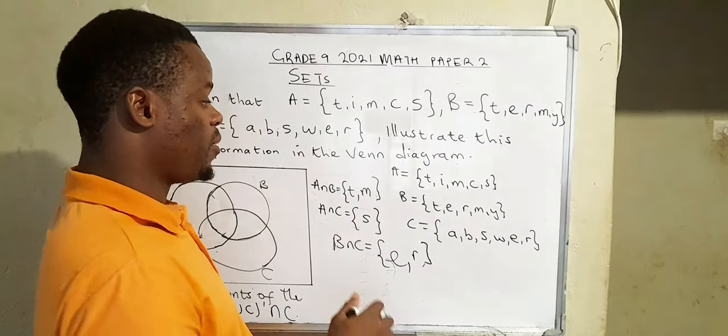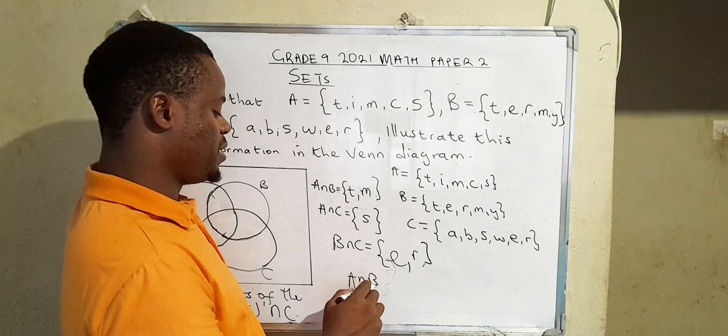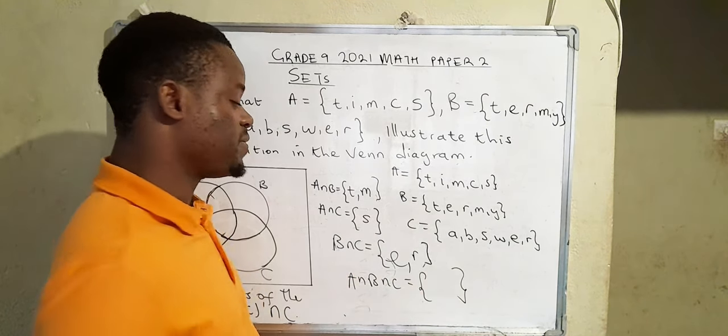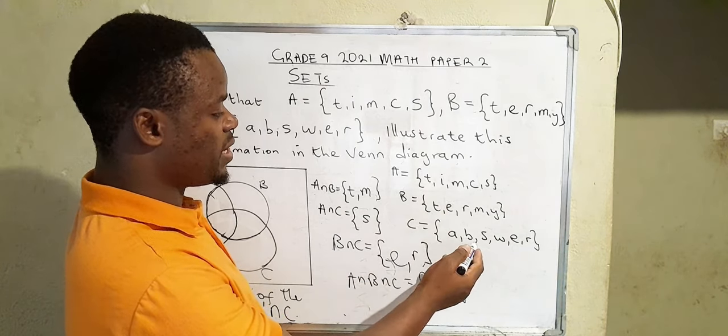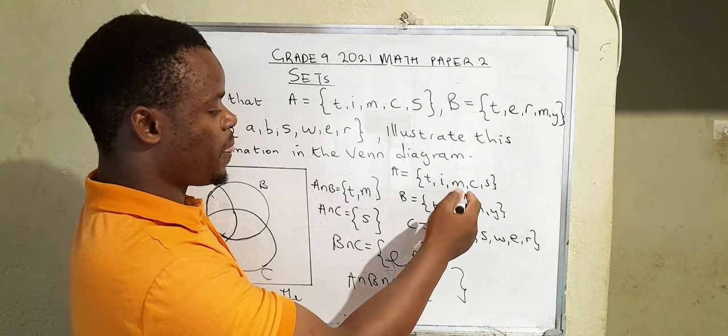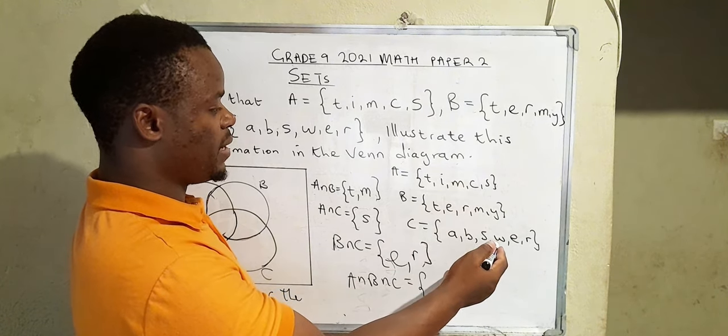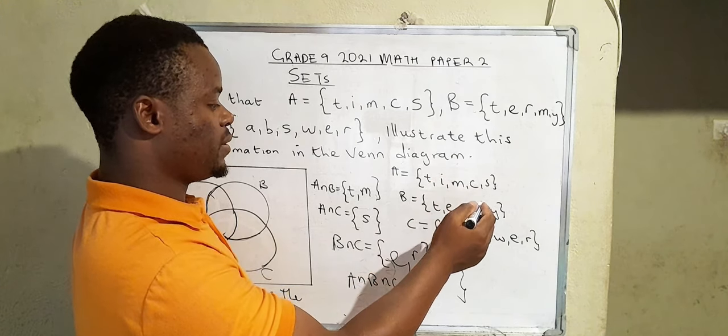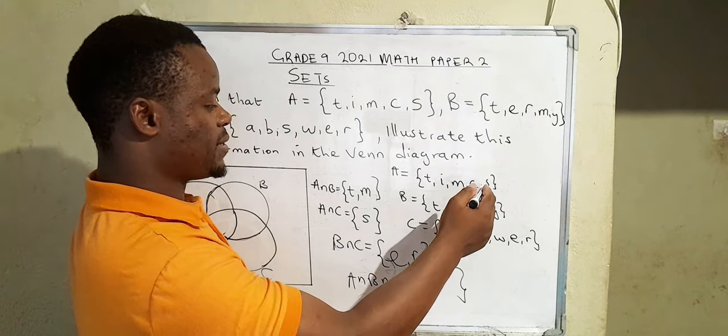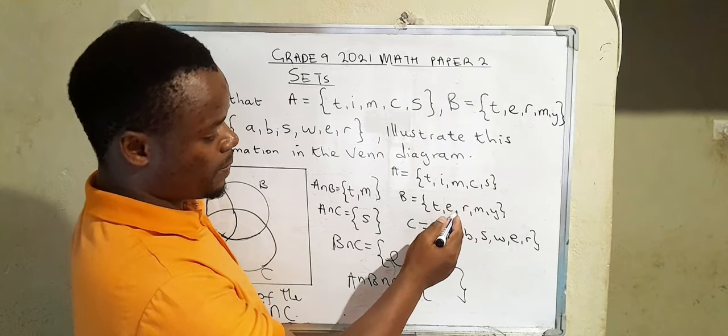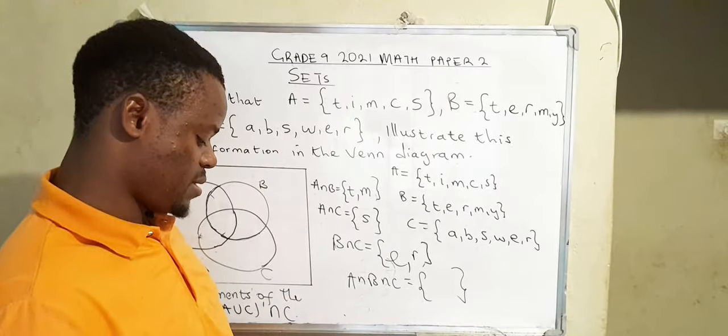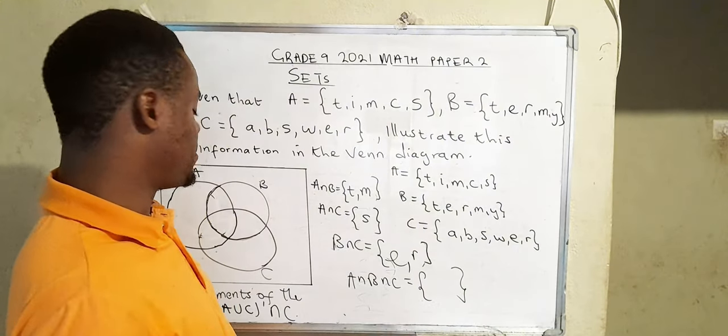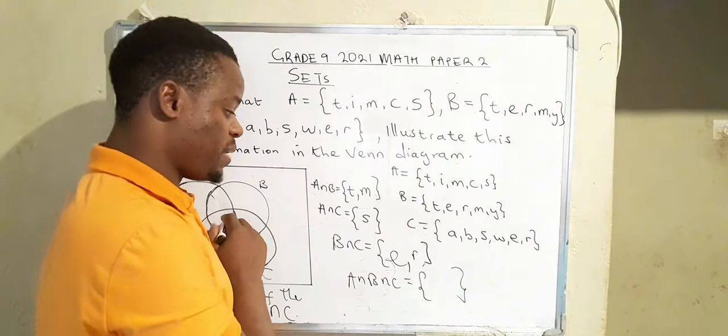After you've found the common elements, you can now say A∩B∩C. In this case, we're going to identify the elements that are common in all of the three sets. So we check. T is there, there's no T here. I, there's no I here. M, there's no M there. Then C, there's no C here. S, there's no S. So the intersection set of the three sets has no element. It's actually a null set. So here we'll leave this part the way it is.